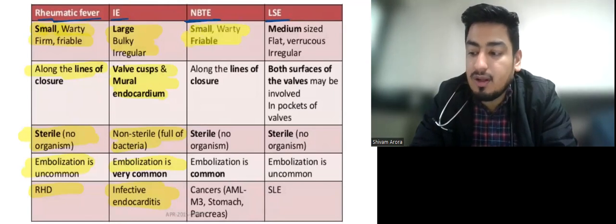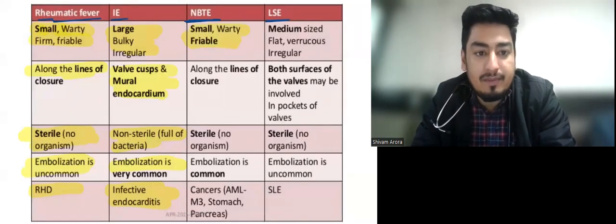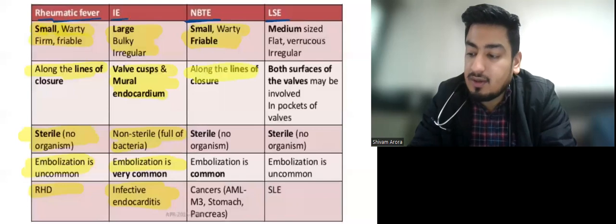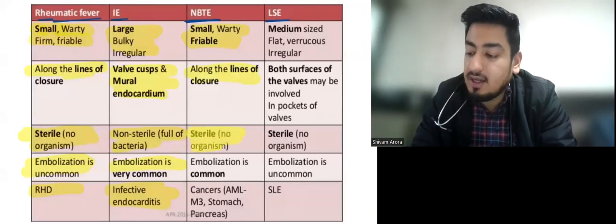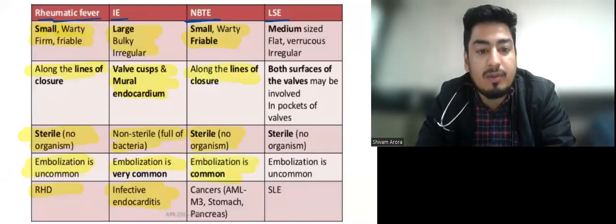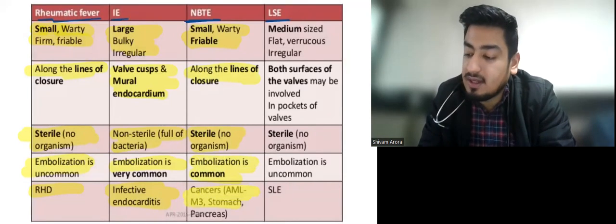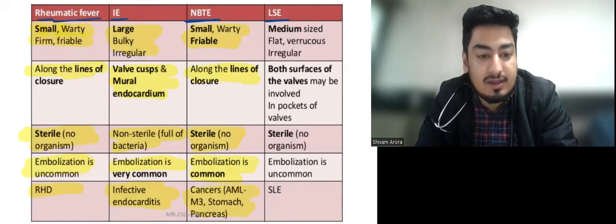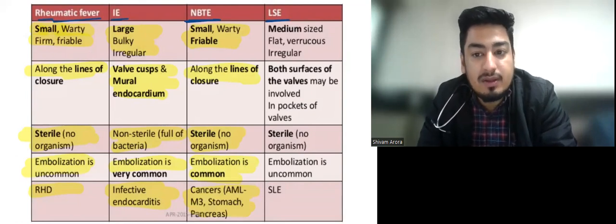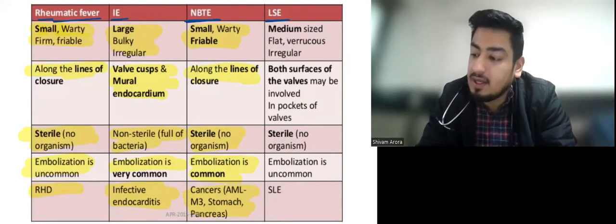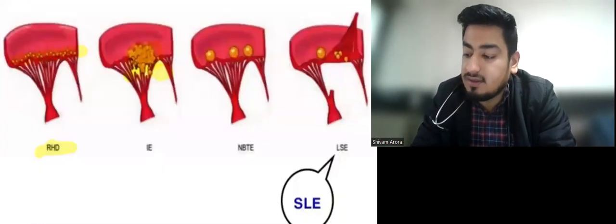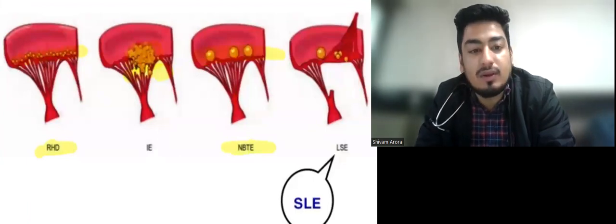Non-bacterial thrombotic endocarditis (NBTE) vegetations are mostly small, warty, and friable. They are also present along the lines of closure, similar to rheumatic fever, and are sterile. However, embolization is more common here because NBTE is seen in cancers like AML, stomach cancer, or pancreatic cancer, making them more prone to embolization. As shown in the image, they are present along the lines of closure.